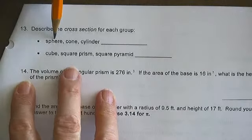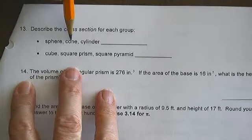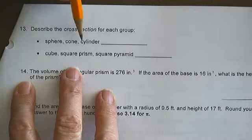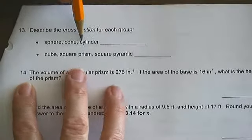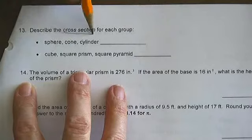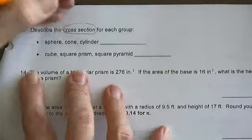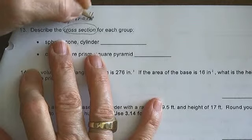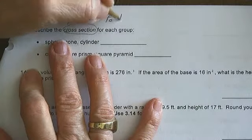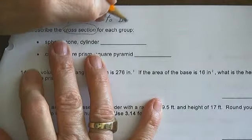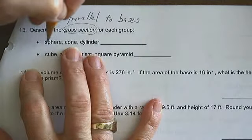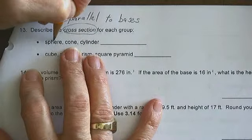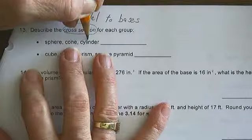A sphere is a ball, a cone looks like an ice cream cone, a cylinder is like a can of soup. The cross section parallel to the bases: circle, circle, circle.